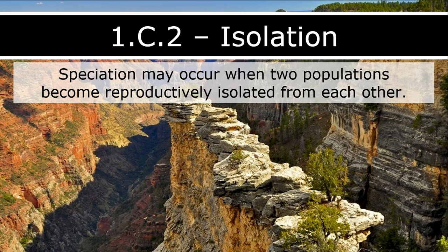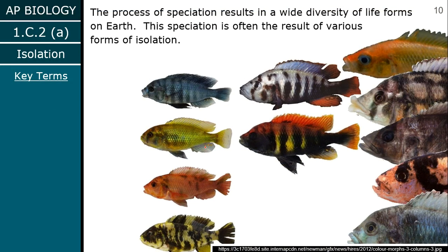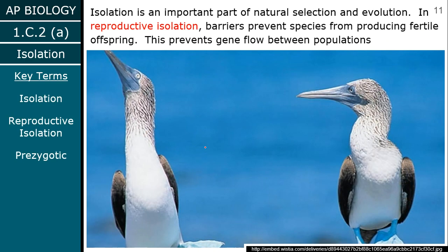Now that we've talked about allopatric and sympatric speciation, let's talk about isolation, which I mentioned in both examples because it is important. We had the geographic isolation of allopatric speciation and the reproductive isolation of sympatric speciation. Speciation leads to all of the diversity we've seen in life — every single different organism you have ever seen is the result of speciation. Generally, speciation is caused by isolation of either of those kinds, which is quintessential to natural selection and evolution.